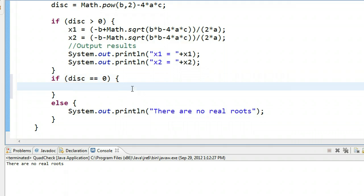So we say if the discriminant is equal to 0, and if the discriminant is equivalent to 0, we only have one real root, so I only have to do the calculation once.